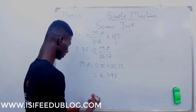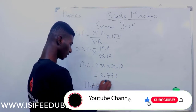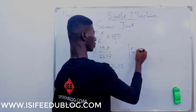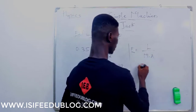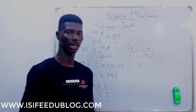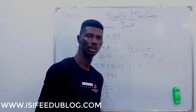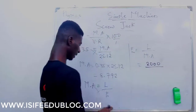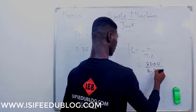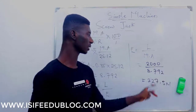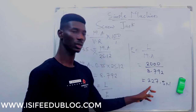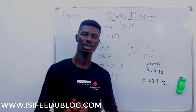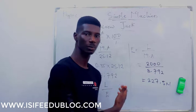Remember what we are looking for is the effort, and we can find it using mechanical advantage. MA = Load / Effort, so making effort the subject: Effort = Load / MA. The load is 2000 N and MA is 8.792, so Effort = 2000 / 8.792 = 227.5 newtons. That is how to apply the screw jack formula in an exam question.